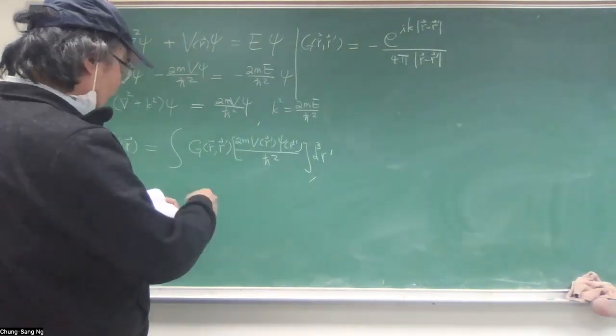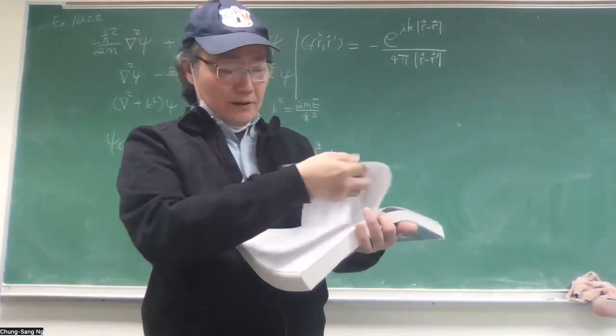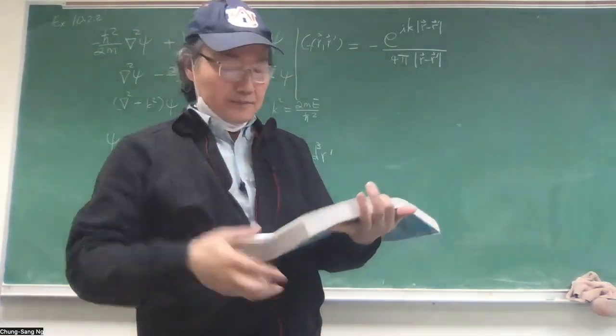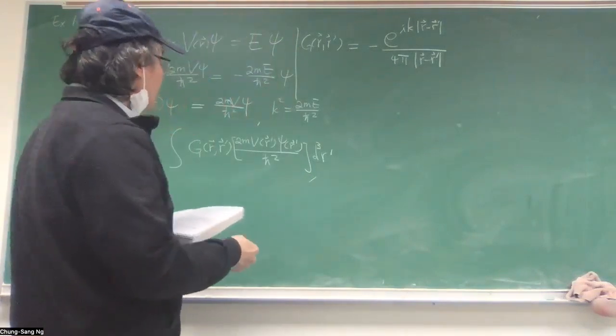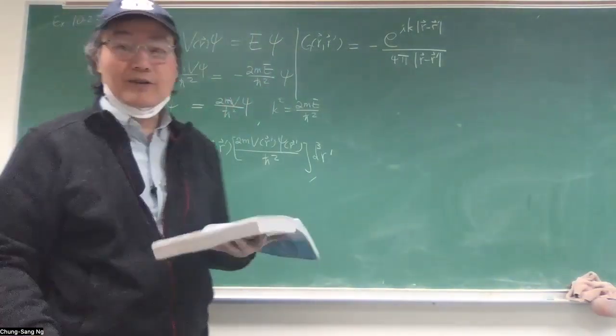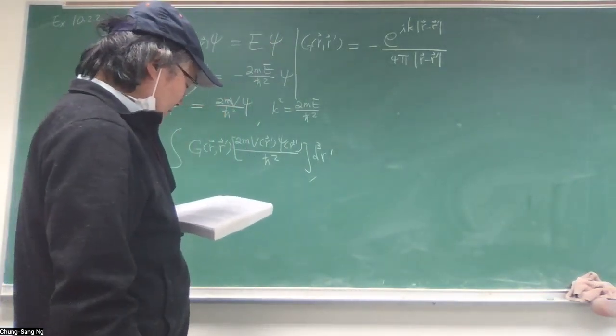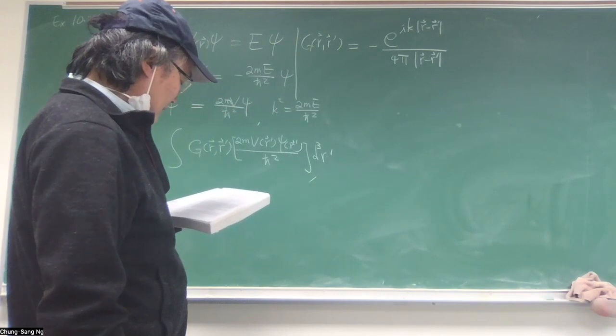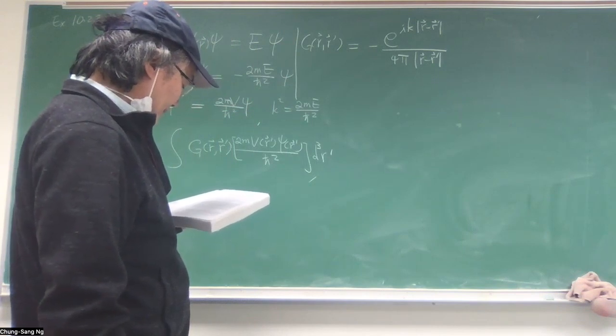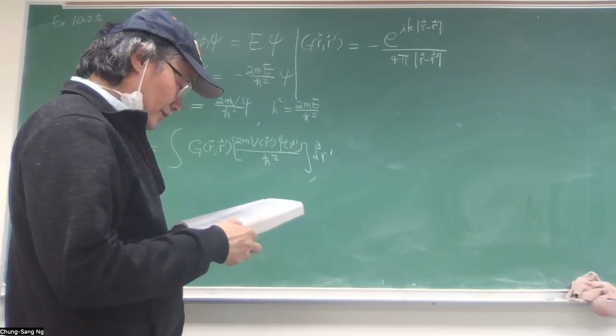Then we got the next column in table 10.1, so assuming that the k is real or this E is positive, then you can use that. Otherwise, you need to be a little careful. So using this Green function. Okay, so going back to this integral, this is up to here is an integral equation.